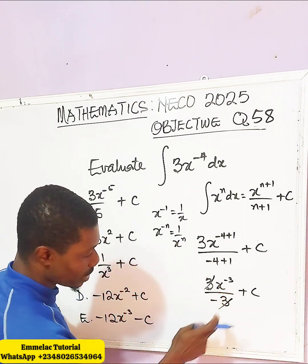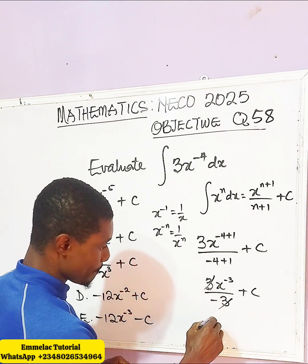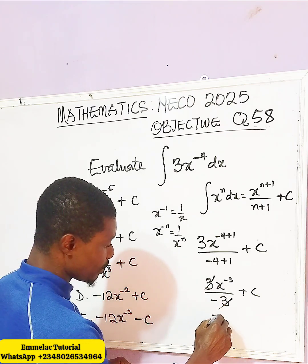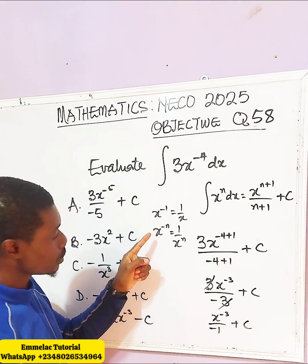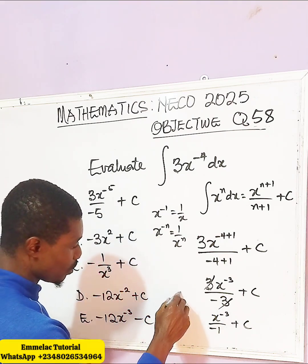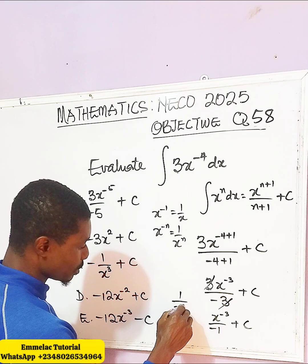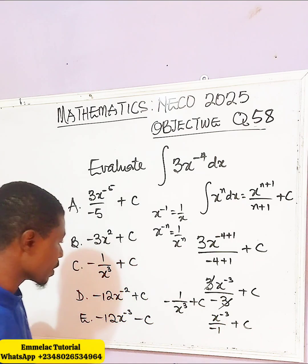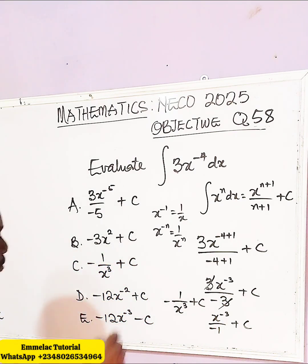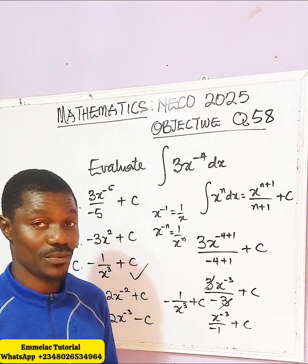So in this case, since this eliminated the other one, we have x raised to the power of negative 3 all over negative 1. Applying this rule, we end up having 1 all over x raised to the power of 3. Take note of our minus, then plus C. So that is the correct option. Thank you and God bless you.